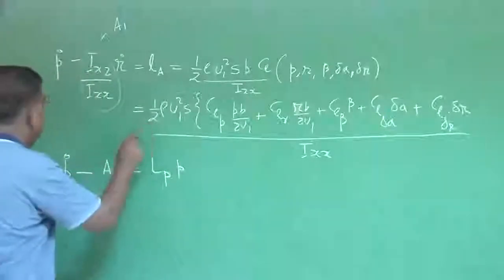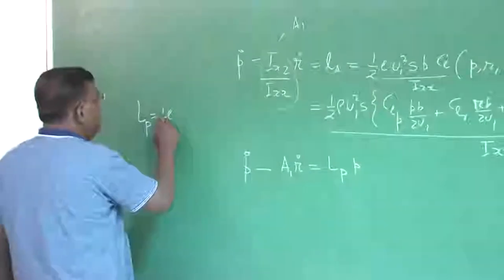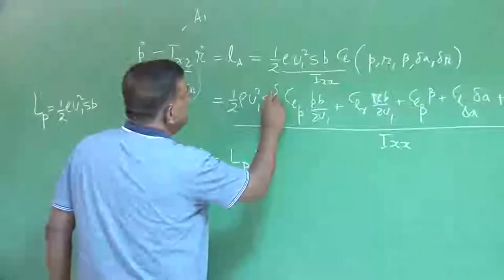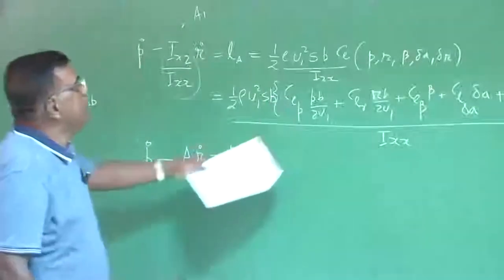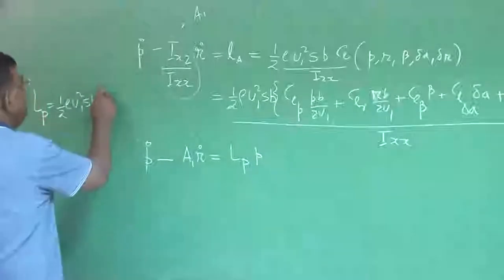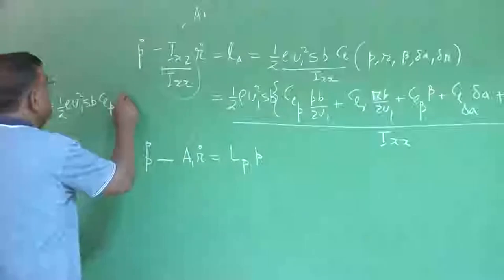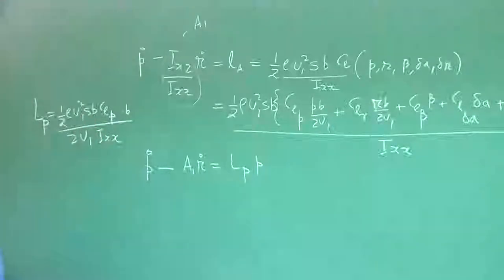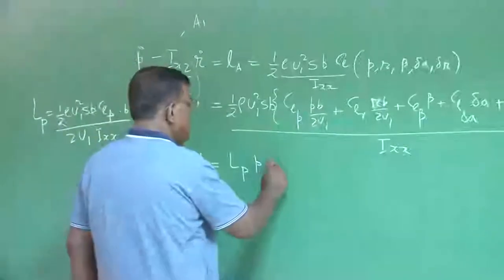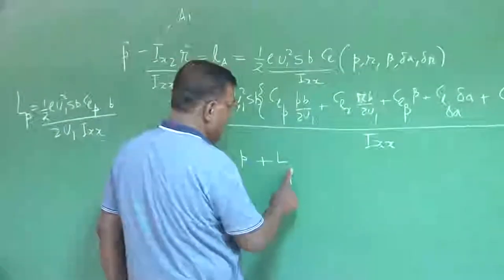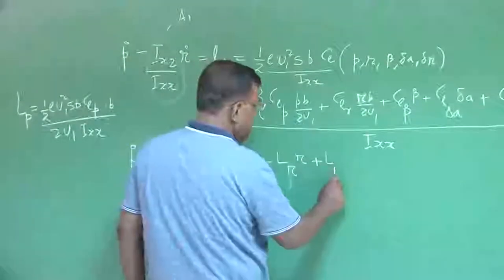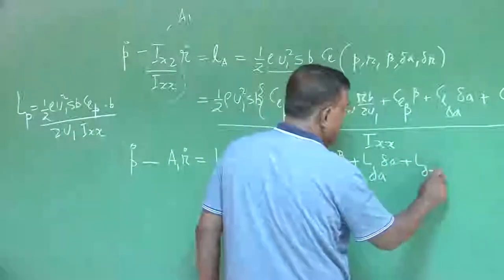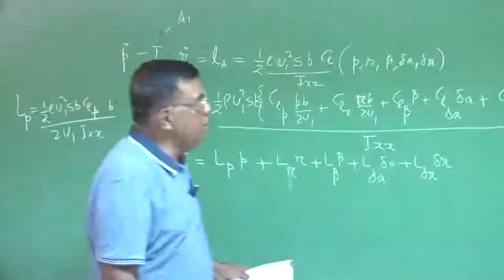This we write as l_p. So what is l_p? From here you can easily see: l_p is nothing but half rho u1 squared times S times b squared times C_lp divided by (2u1 times i_xx), because b times b becomes b squared. Similarly, we write l_r times r plus l_beta times beta plus l_delta_a times delta_a plus l_delta_r times delta_r. That is exactly your second equation.